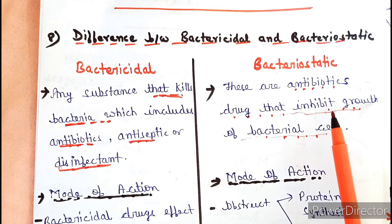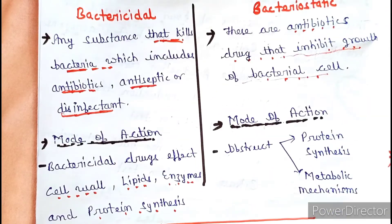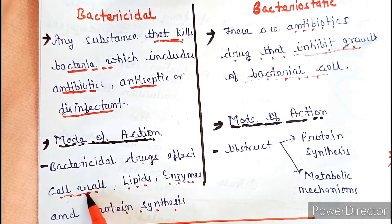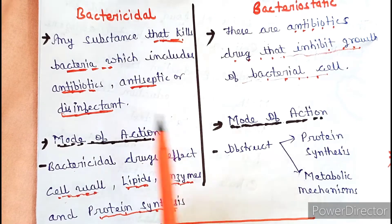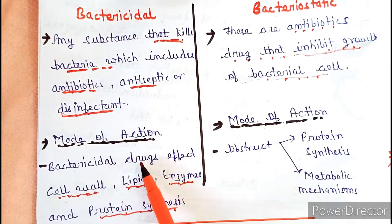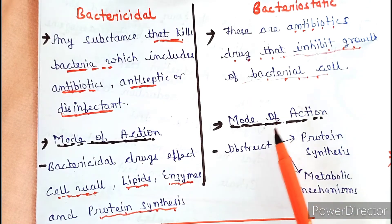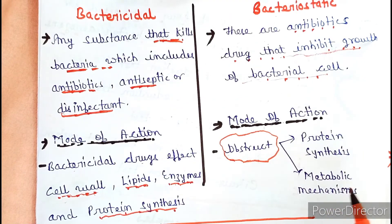The mode of action of bactericidal drugs affects the cell wall, lipids, enzymes, and protein synthesis. In the case of bacteriostatic drugs, the mode of action targets protein synthesis and metabolic mechanisms.